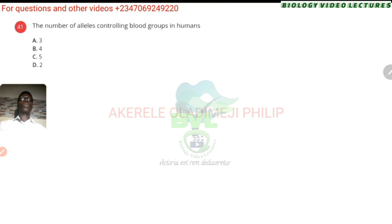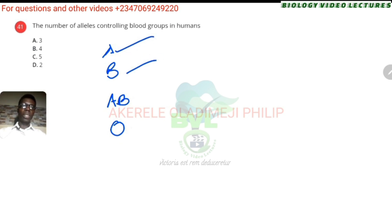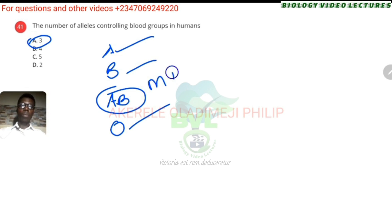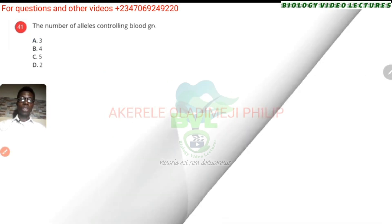The number of alleles controlling blood group in humans — blood groups are A, B, AB, and O. You can see A, B, and O — these are three alleles, because AB is just a repetition of A and B. This is an example of what we call multiple alleles in humans, and that is controlling the blood group in humans.